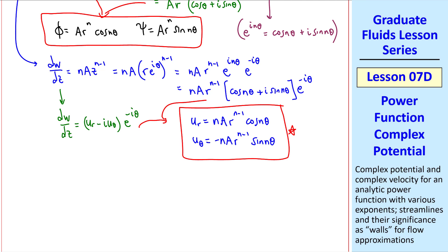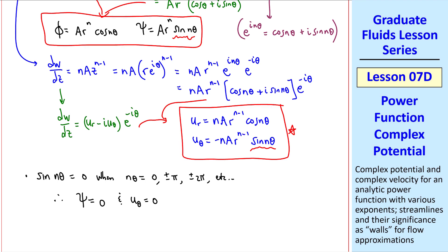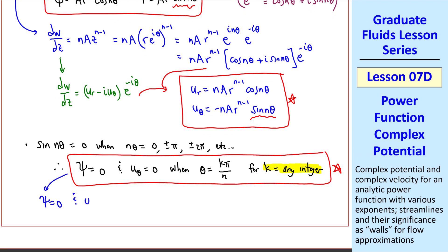Now notice that both psi and u_theta have sine n theta in their respective equations. We know that sine n theta is 0 when n theta is 0, or plus or minus pi, plus or minus 2 pi, etc. Therefore, psi equals 0 and u_theta equals 0 when sine n theta is 0, which are all these cases. So we write when theta equals k pi over n for k equal to any integer. This is an important conclusion. It means that psi equals 0 and u_theta equals 0 along rays theta equals k pi over n. We'll use this fact to construct the geometry of our flows.